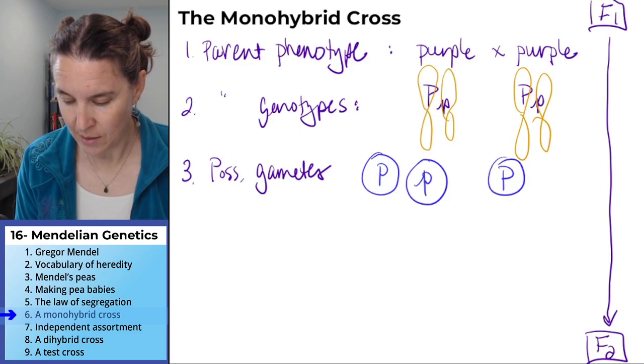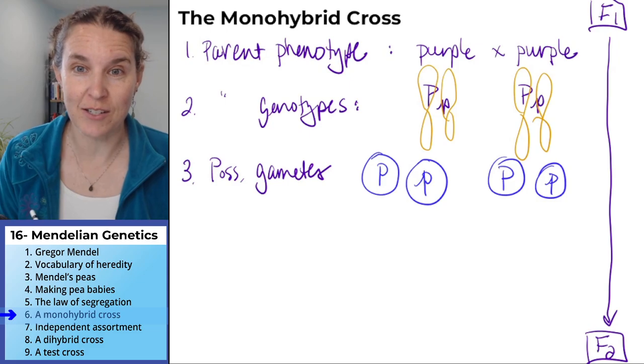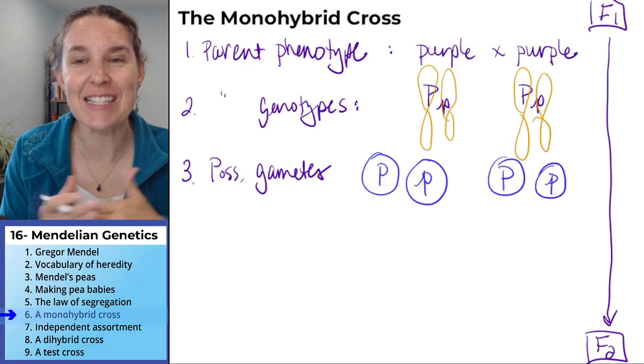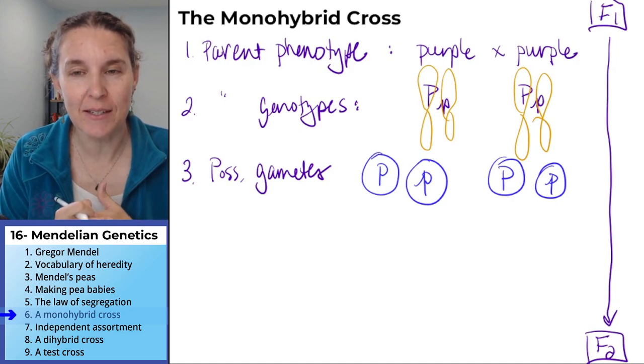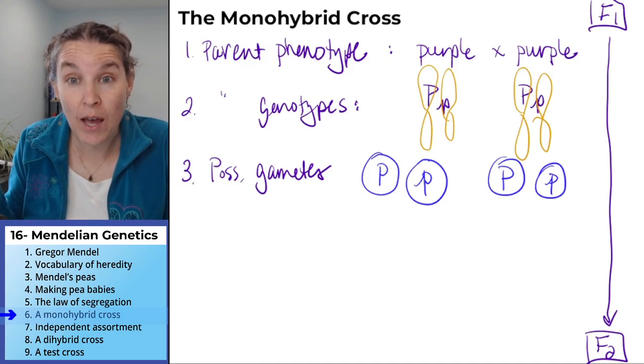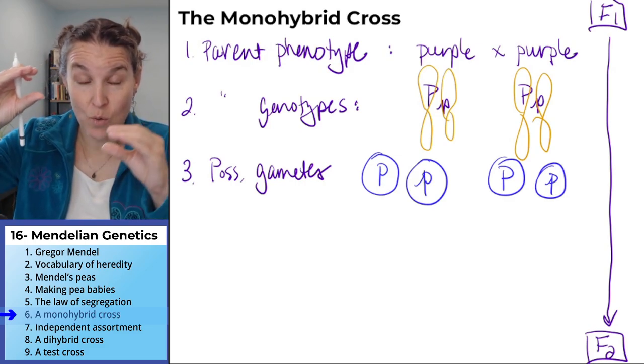The second parent has the same possible gametes. Do you see how now we've got four possible gametes, two on each side?